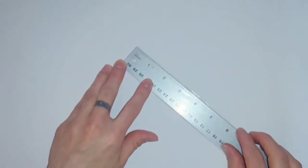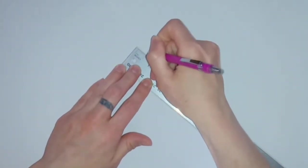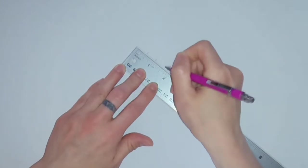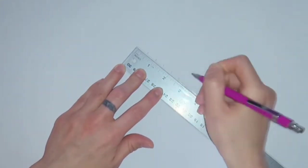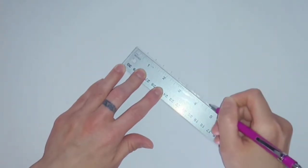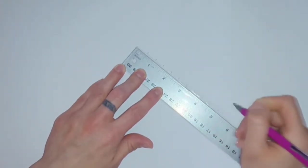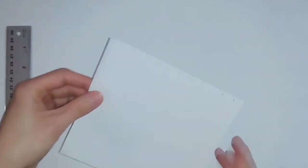Mark out half an inch all along the edge until you've gone along the whole length of your paper. Once you've done that, you should have something that looks like this.